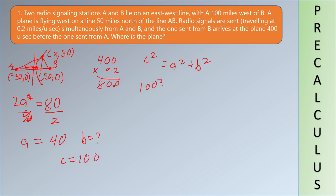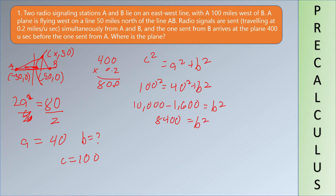So 100 squared equals a squared plus b squared — that is, 10,000 equals 1,600 plus b squared. Solving: b squared equals 10,000 minus 1,600, which gives b squared equals 8,400. So b is approximately 91.65.